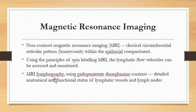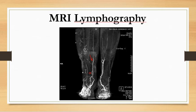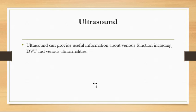Non-contrast MRI shows a classical circumferential reticular honeycomb pattern within the epifascial compartment, where lymphatics are predominantly located. Using spin labeling MRI principles, lymphatic flow velocity can also be assessed. Gadolinium contrast MRI shows detailed anatomical and functional status of lymph vessels and lymph nodes, and dilated lymphatics are visible on MRI lymphography.